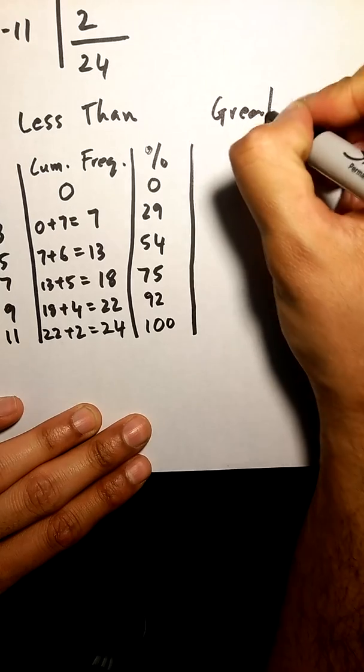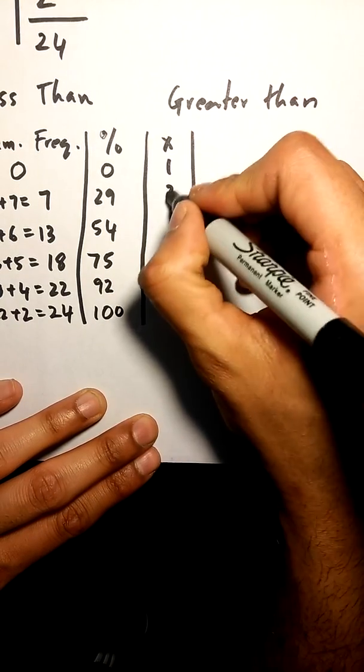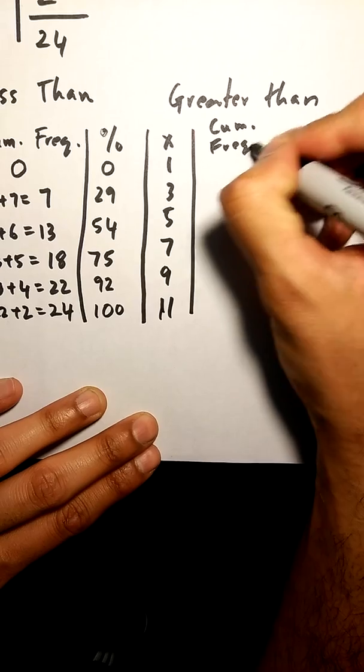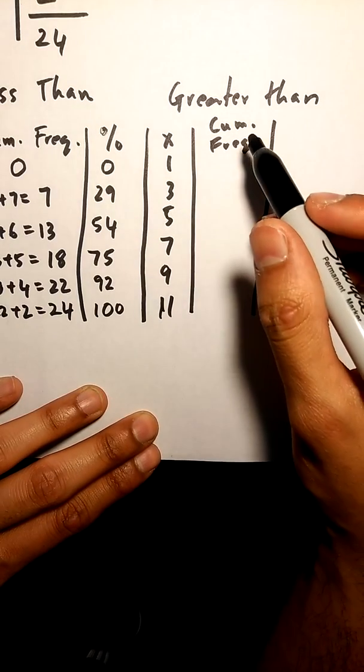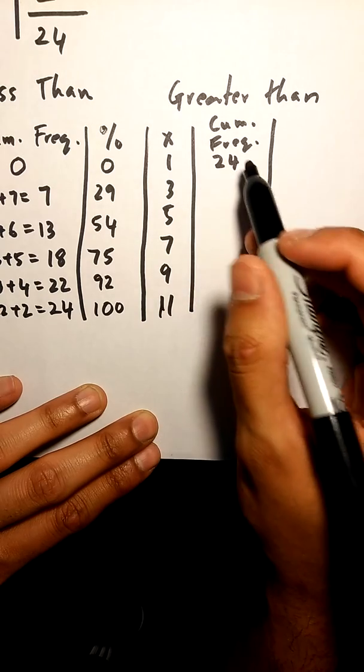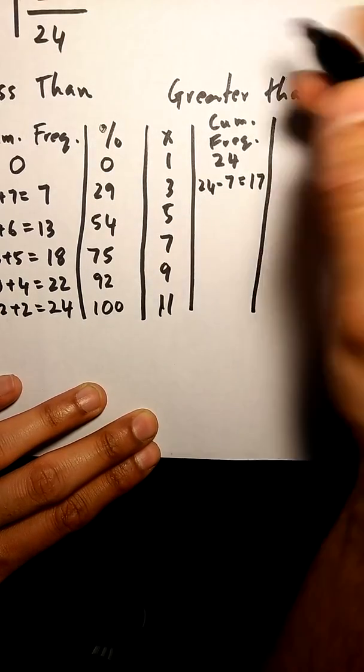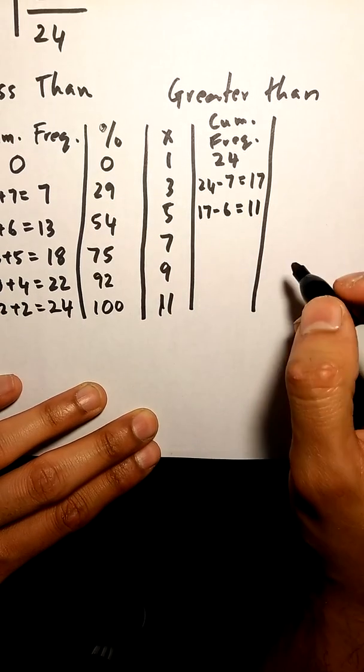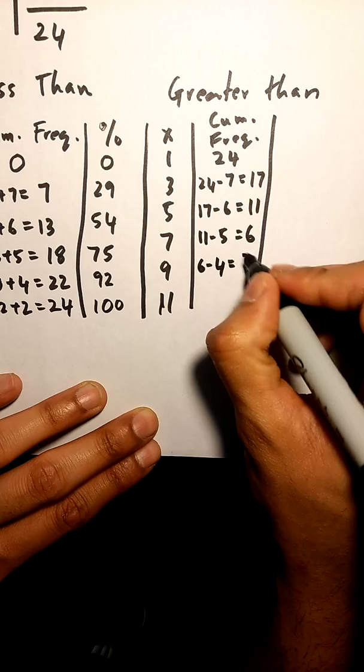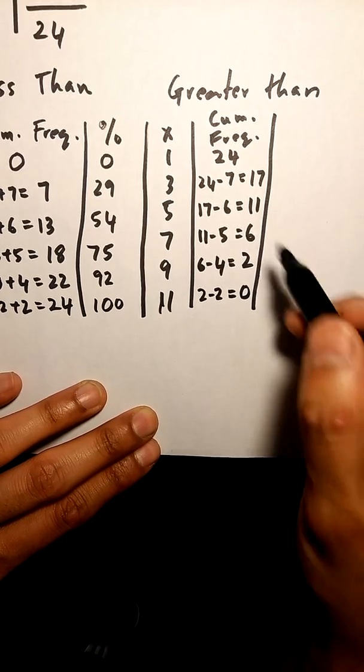What we can do next is do our greater than table. So again, our first column X is literally the same: 1, 3, 5, 7, 9, 11. Second column, which is the cumulative frequency, in this case for greater than table the cumulative frequency starts at the biggest number, so 24. My next one will be 24 minus 7 which is 17. Next one is 17 minus 6 which is 11. Next one is 11 minus 5 which is 6. 6 minus 4 which is 2, then 2 minus 2 which is 0. Your greater than table should always end at 0.